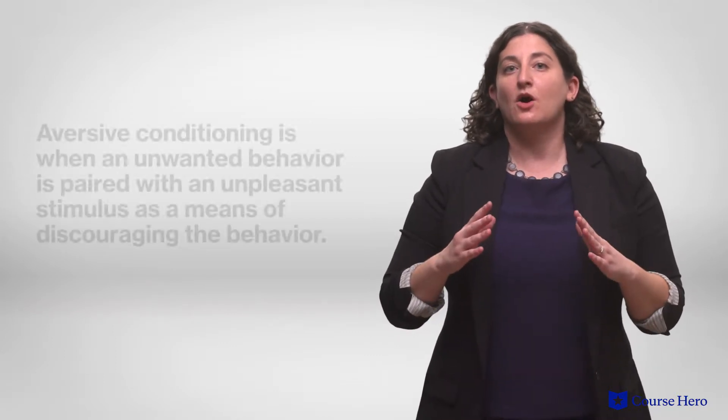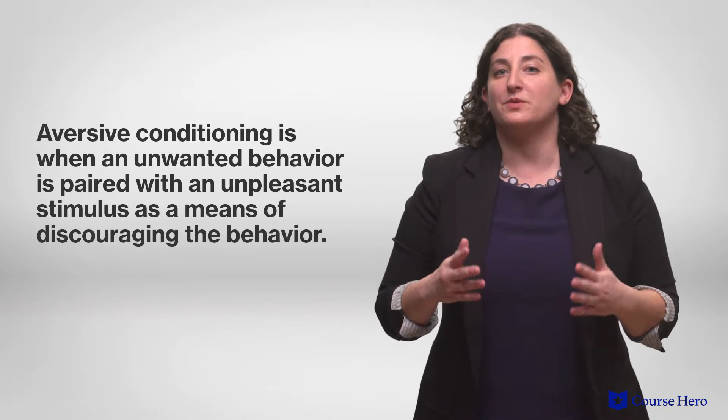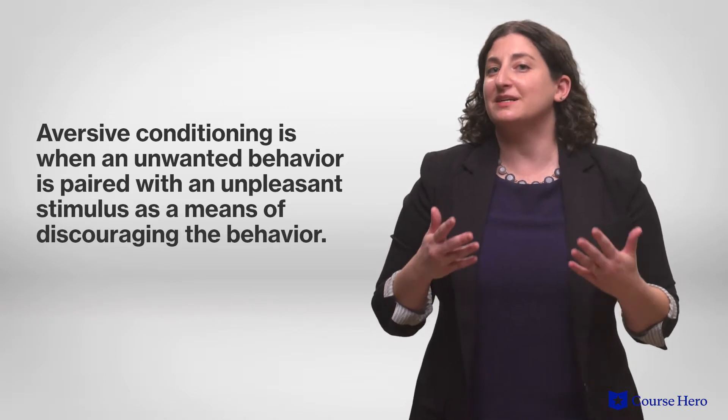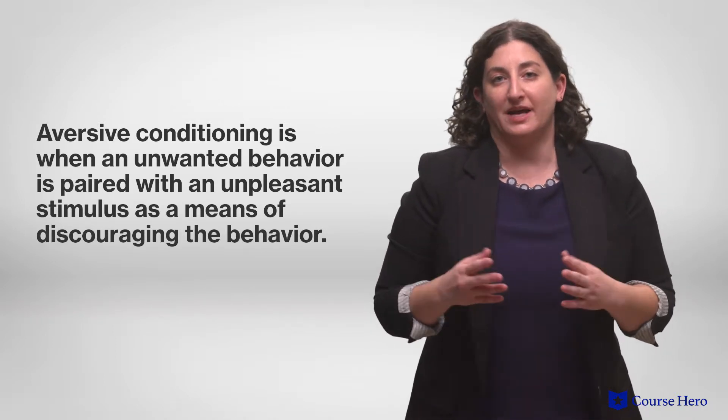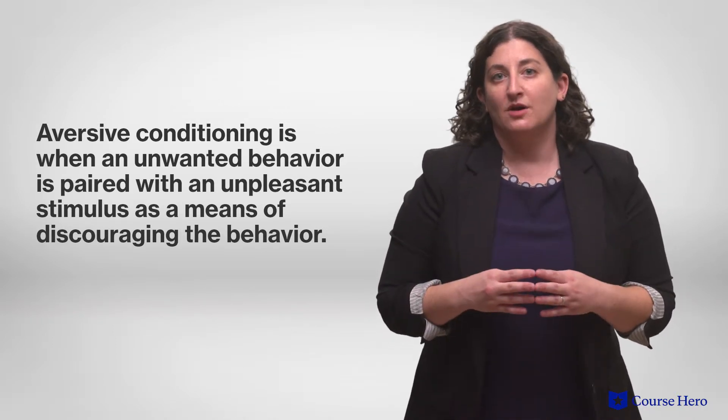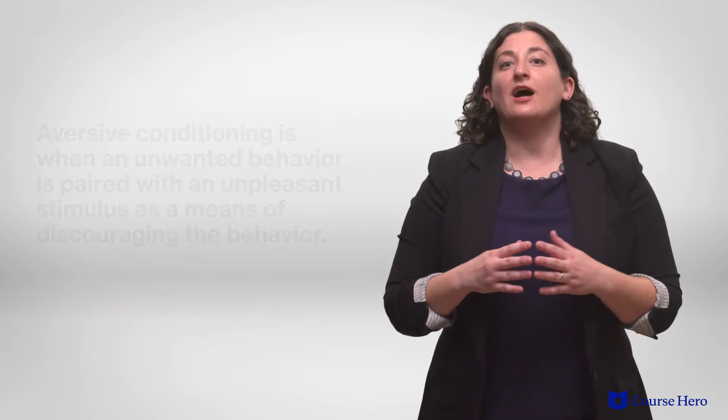Behavioral therapies also make use of aversive conditioning, where an unwanted behavior is paired with an unpleasant stimulus as a means of discouraging the behavior. For example, clinicians might help someone overcome excessive drinking by having them take a medication that induces nausea whenever they drink. They will then learn to associate drinking alcohol with becoming ill and hopefully develop an aversion to drinking alcohol.